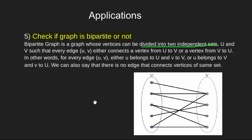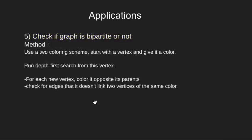To implement it we use a coloring scheme. We choose a starting vertex and color it with first color. Then we run depth first search for others keeping in mind two conditions. Firstly for each new vertex we color it opposite to its parent color.